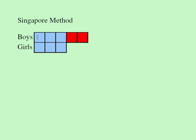If you use three blue squares to represent the boys born in Georgia, you also need three blue squares to represent the girls born in Georgia. This is a crucial step. If three-fifths of the boys were born in Georgia — meaning five squares represent all boys and three of them are born in Georgia — then the same number of girls must also be represented by three squares.